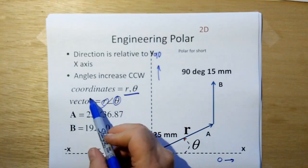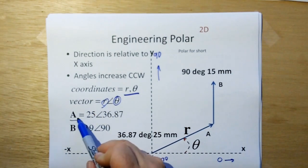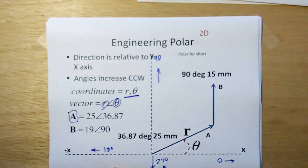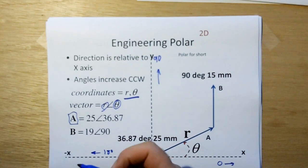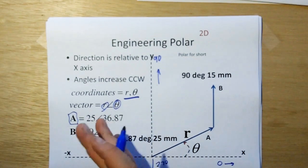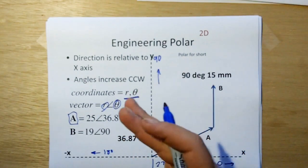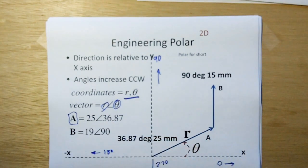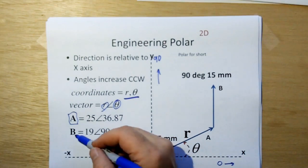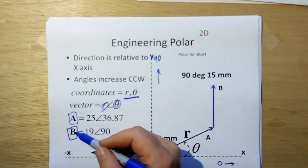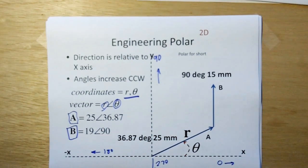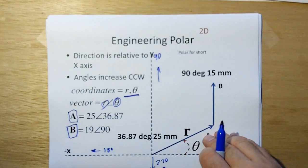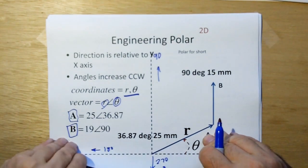We represent vectors as variables that are uppercase, and it doesn't have to be one character — we can use multiple characters. But for the sake of this course, we're going to use single-letter vector labels to represent vectors. That's engineering polar.